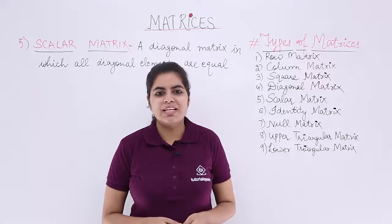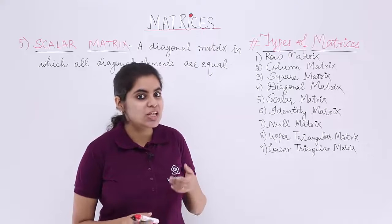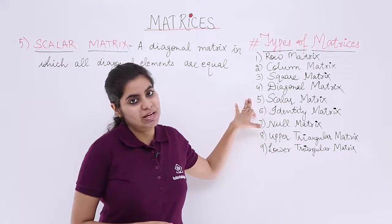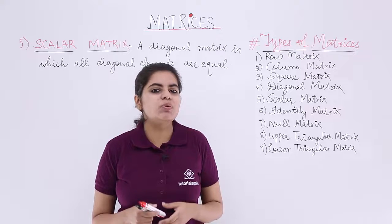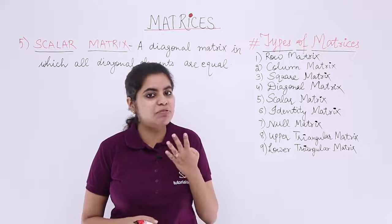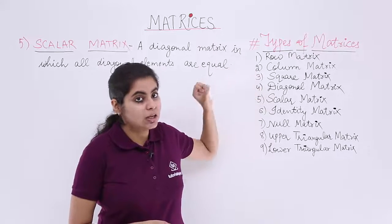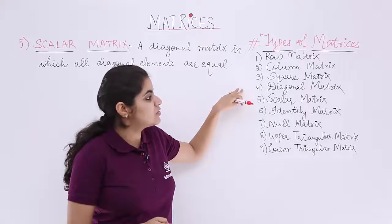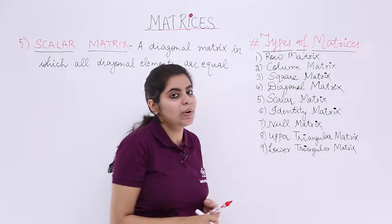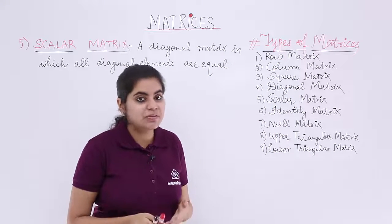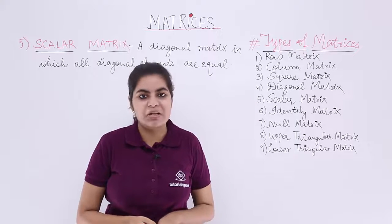In this video, let's see what we mean by the other type of matrix called the scalar matrix. We have already seen in our previous videos four types of matrices: row matrix, column matrix, square matrix, and diagonal matrix. In this video, we are going to see the fifth type of matrix called the scalar matrix.